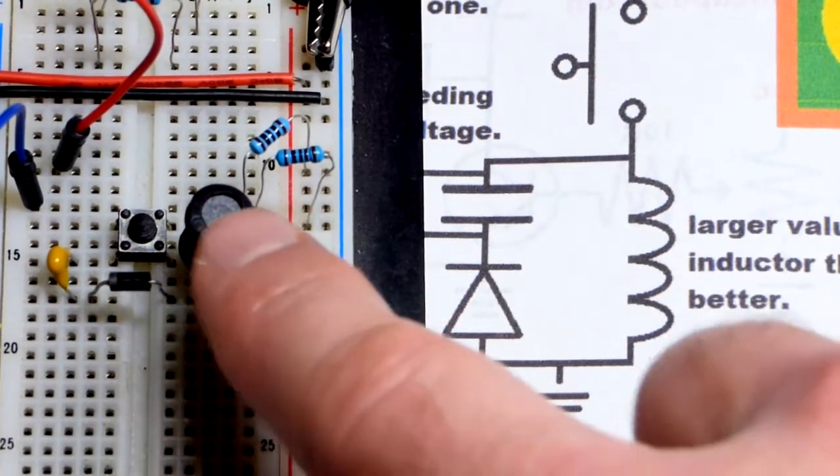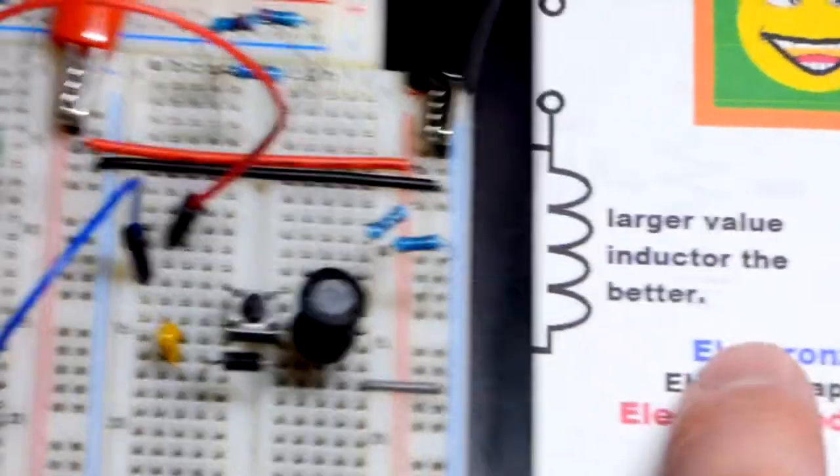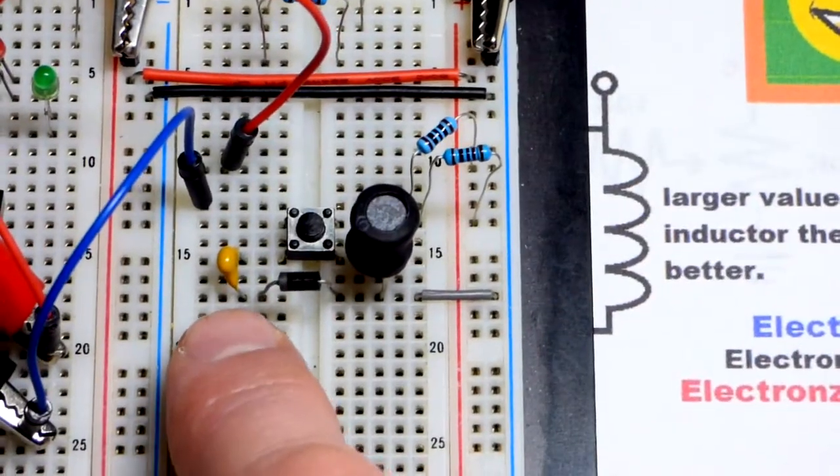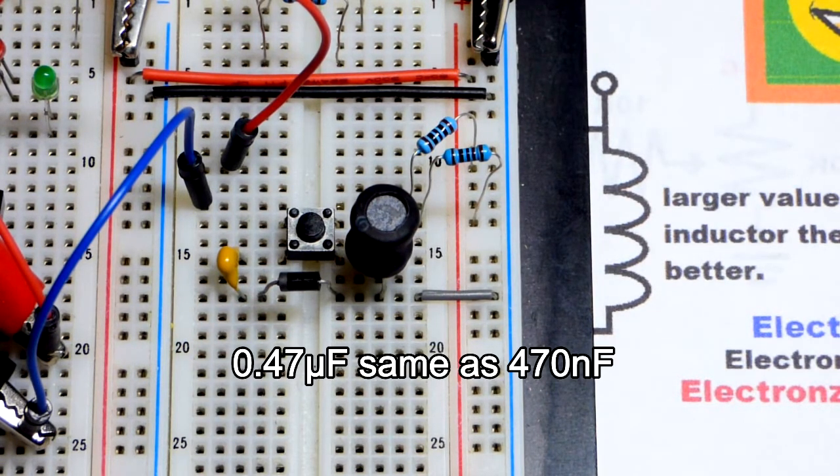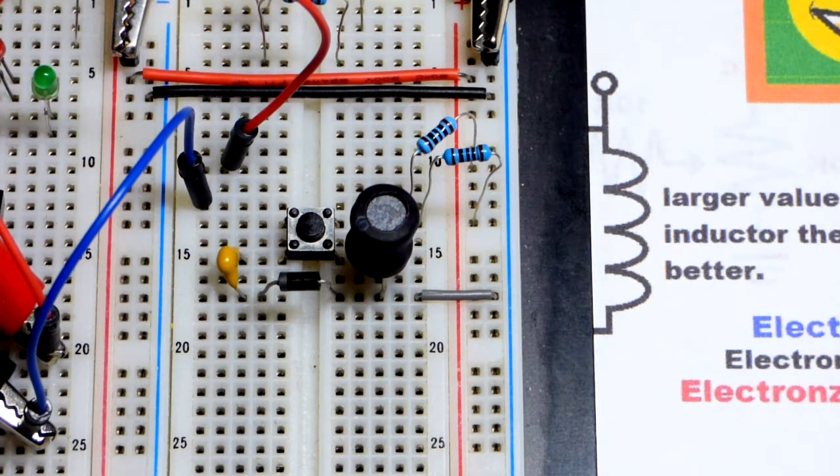So that's a 100 millihenry inductor. The larger the better. This is a 0.47 microfarad capacitor. So 470 nanofarad. A small value capacitor. It will jump up in voltage quickly. But not hold a lot of charge.